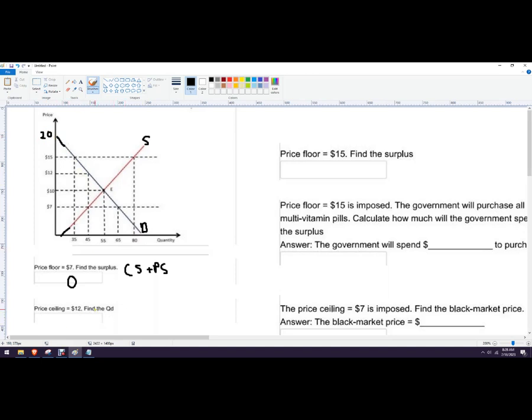Price ceiling of $12. This means it's not legal to charge any higher than $12. So any price below $12 is going to be legal. And so the quantity demanded is just going to be the equilibrium. So this case would be 55.